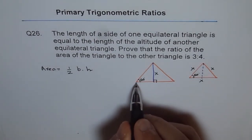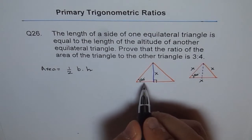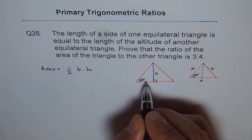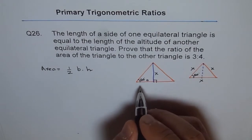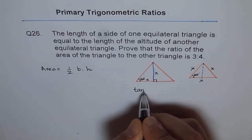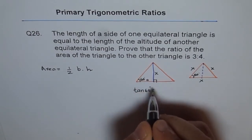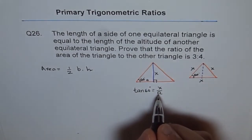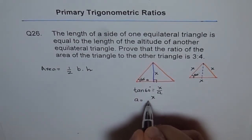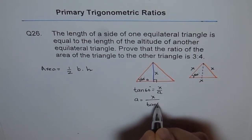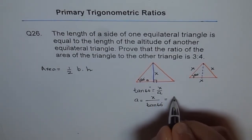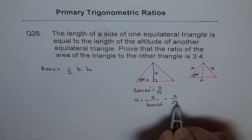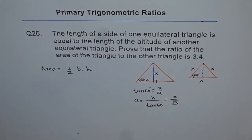Let's find what the base is for this triangle. Since this is 60 degrees, let's say the base is b, and half of the base is a. We can solve this triangle which is a 60-degree triangle. From here we know tan of 60 degrees equals x over a, so a equals x divided by tan of 60 degrees. Tan of 60 degrees is square root of 3, therefore a equals x over square root of 3.